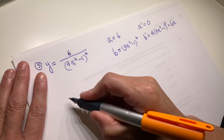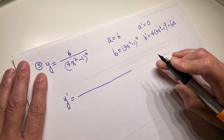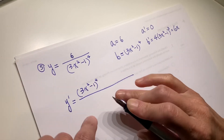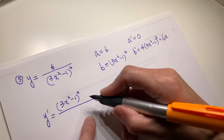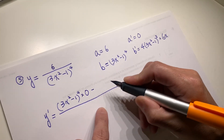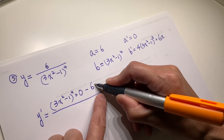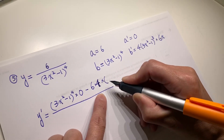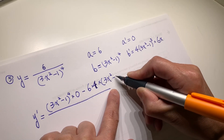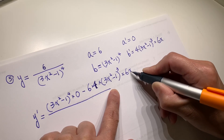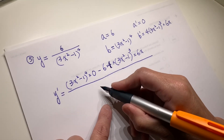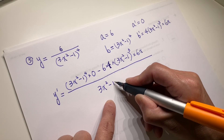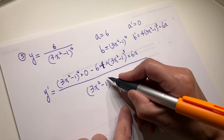Now we use the quotient rule. y prime equals low D high — (3x squared minus 1) to the power of 4 times the derivative of the numerator, which is 0 — minus high times D low: 6 times 4 times (3x squared minus 1) cubed times 6x, all over the denominator squared, which is (3x squared minus 1) to the power of 8.